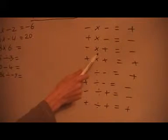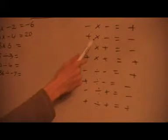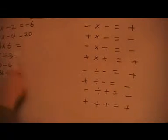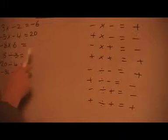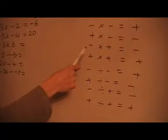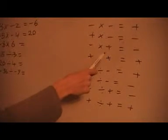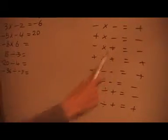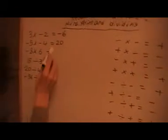One more example: minus 8 times 6. We know that 8 times 6 is 48. But we need to look at the rules to see whether it's a plus or a minus. We've got a minus times a plus, and the rule says that a minus times a plus is a minus. So it's minus 48.